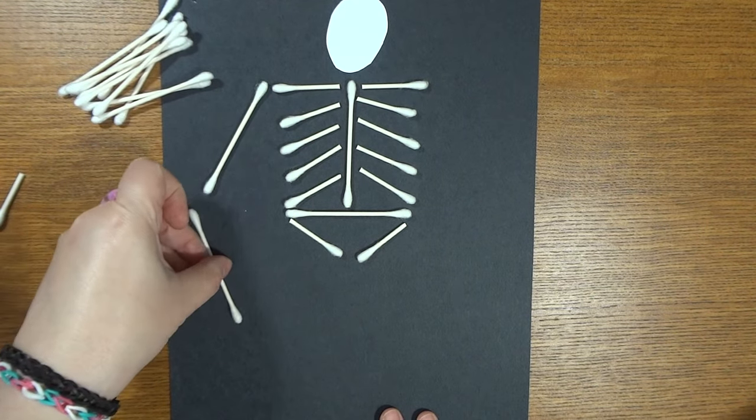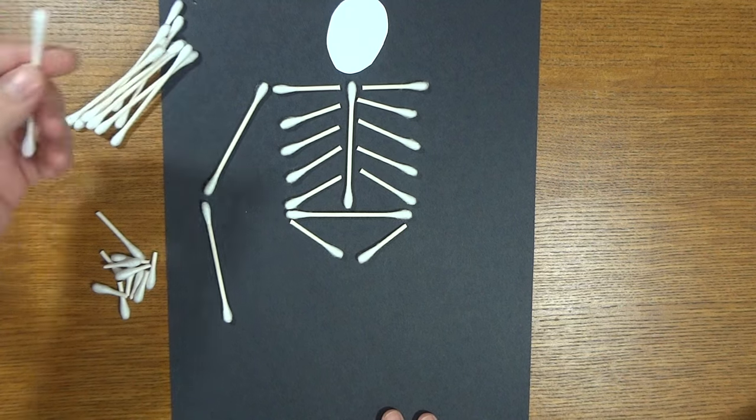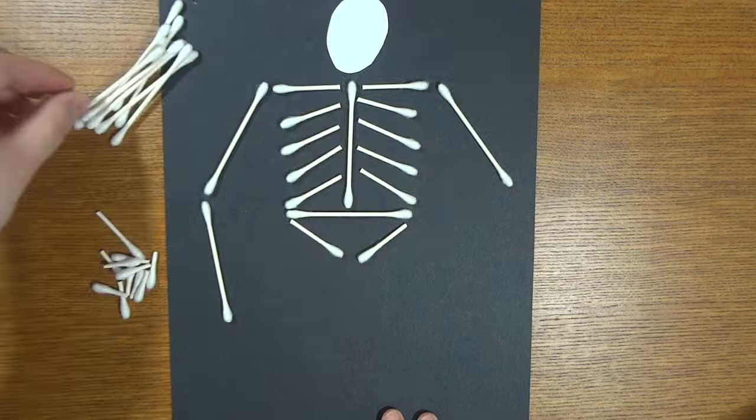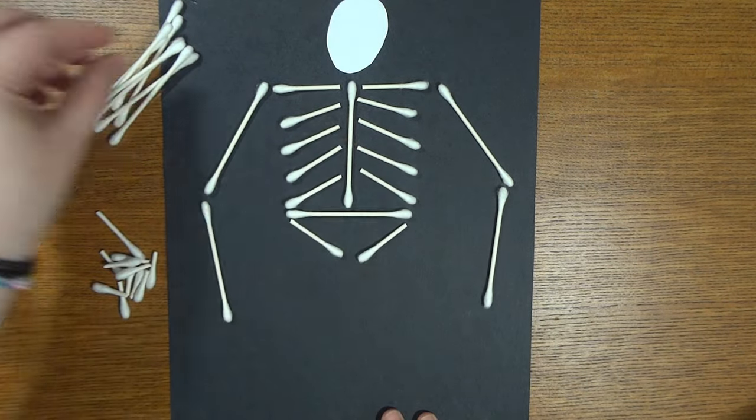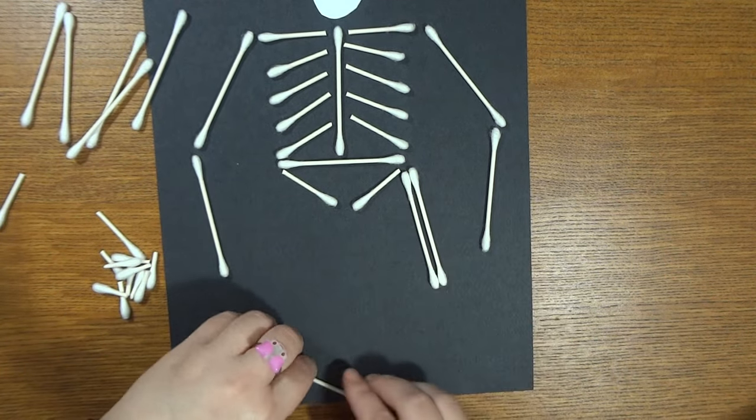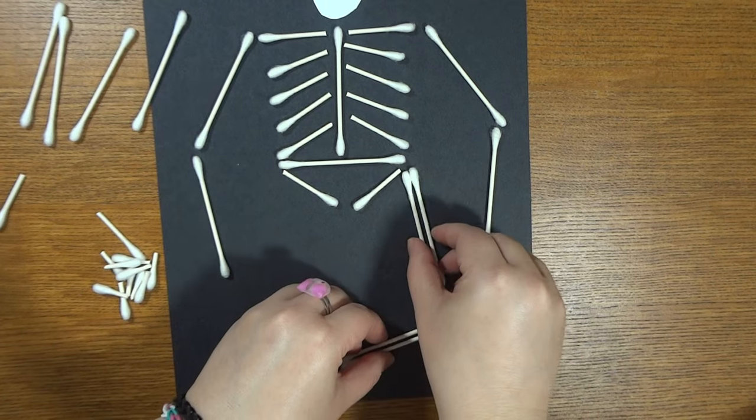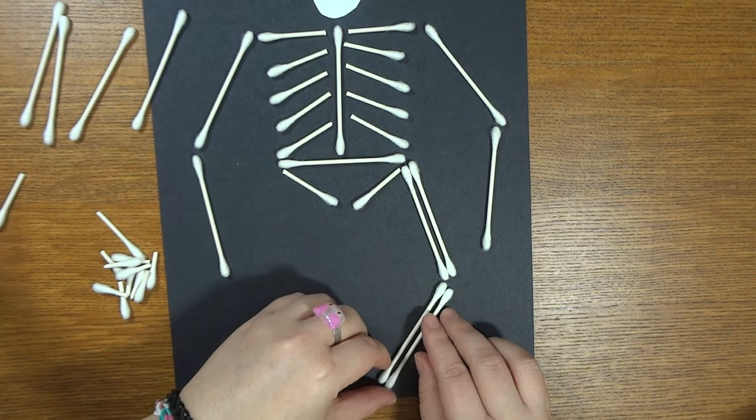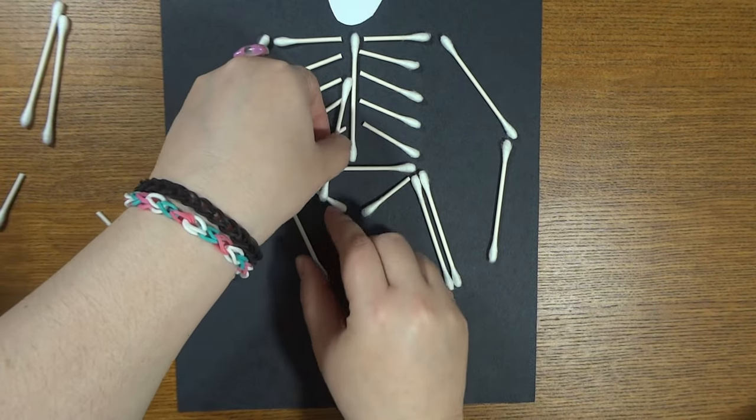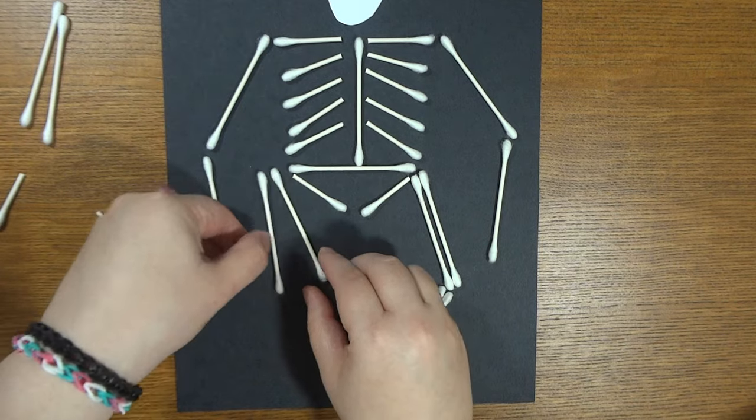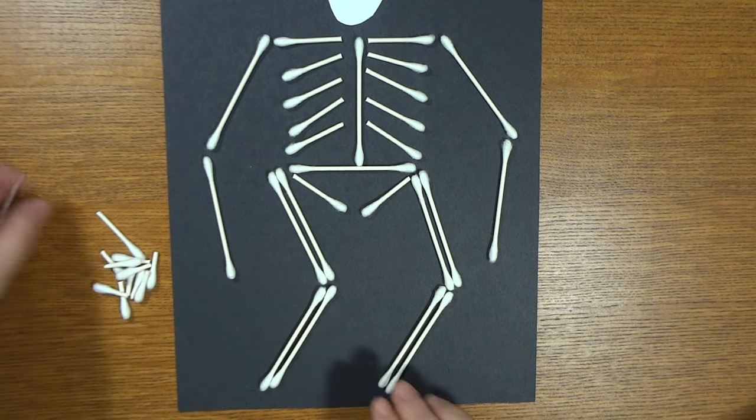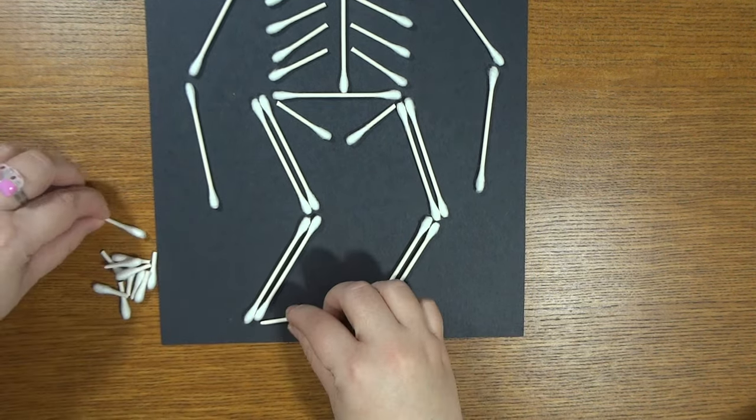Then you need some arms. You could totally do your own thing - you can chop these cotton swabs into smaller pieces if you want smaller arms. I like to do two cotton swabs for the legs because I like the bone look that it makes, just like that. And then we've got little feet.